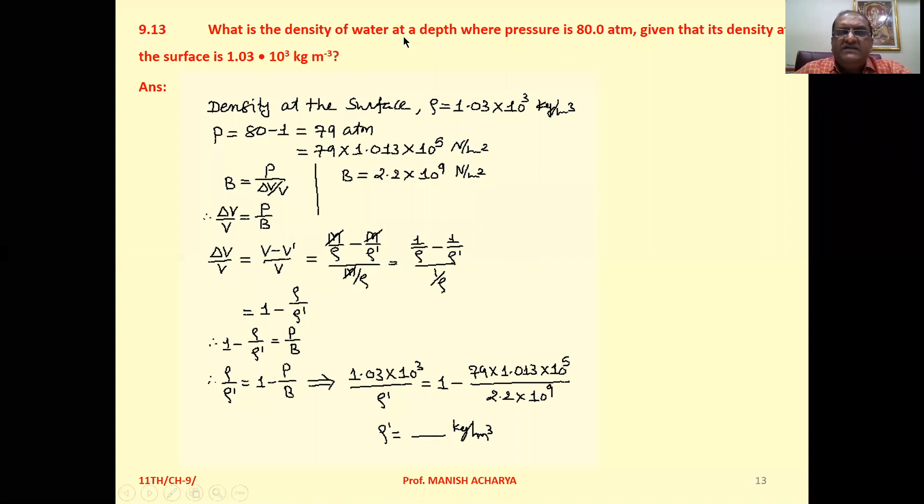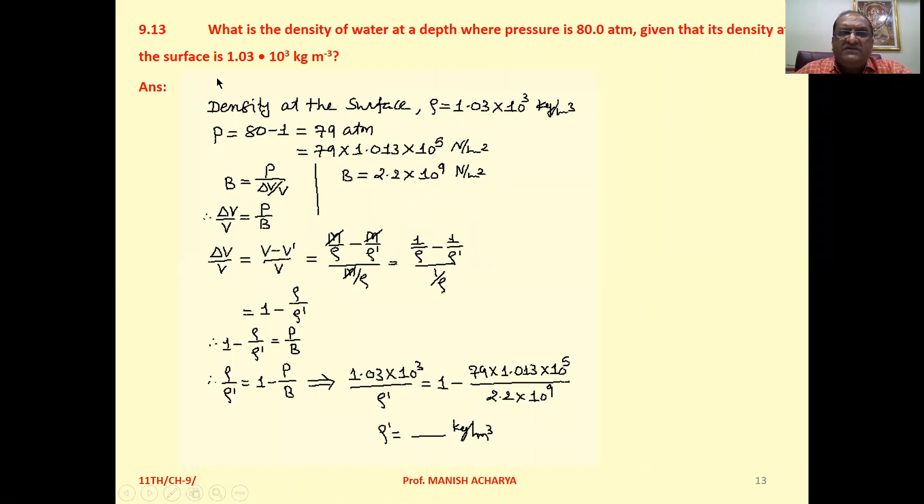Problem 9.13: What is the density of water at a depth where pressure is 80 atmospheres, given that its density at the surface is 1.03 times 10 raised to 3 kilograms per meter cubed?